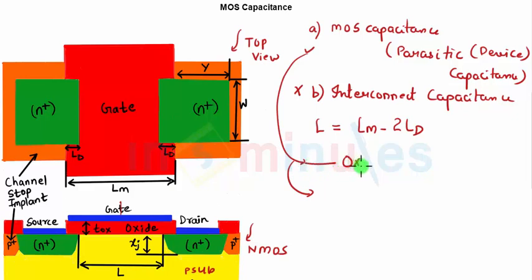With that now we are all set to start understanding that parasitic capacitance in a MOSFET are also classified into two types: one is oxide capacitance, another one is junction capacitance. In this clip we are going to study oxide capacitance in details.